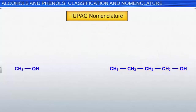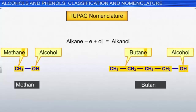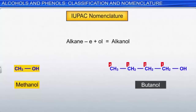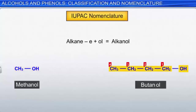In IUPAC nomenclature, the alcohol name is derived from the alkane name of the longest continuous carbon chain. Drop the 'e' from the alkane name and replace it with the suffix '-ol.' The location of the hydroxyl group and additional substituents are indicated by the numbers of the carbon atoms to which they are attached. In the IUPAC system, methyl alcohol (CH3OH) is called methanol, and n-butyl alcohol is called butan-1-ol.